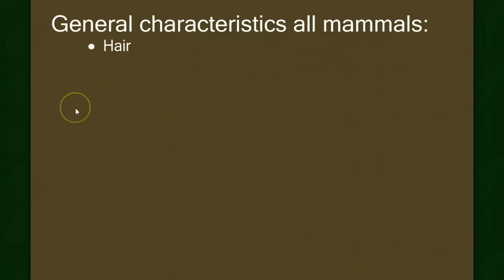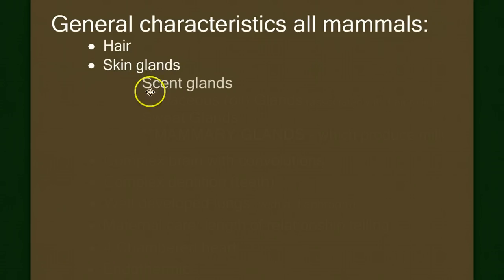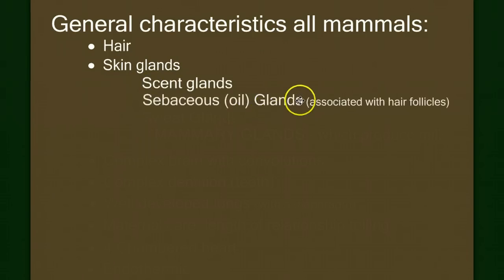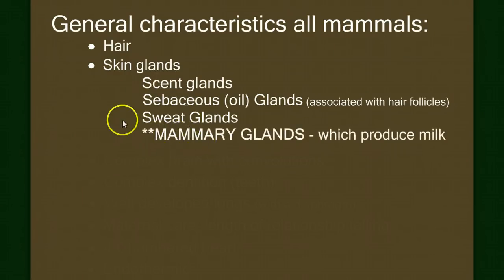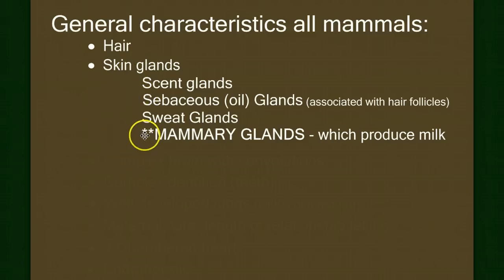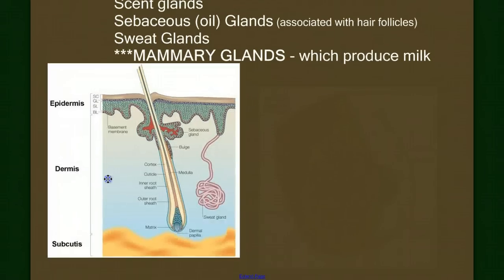The next characteristic defining of mammals is the presence of skin glands. Mammals have scent glands, sebaceous glands — which are oil glands associated with hair follicles — sweat glands, and finally, the defining characteristic of the group: mammary glands, which produce milk. Mammals are the only animals that can sustain their young by feeding them from nourishment of their own body. Let's take a closer look at these skin glands.